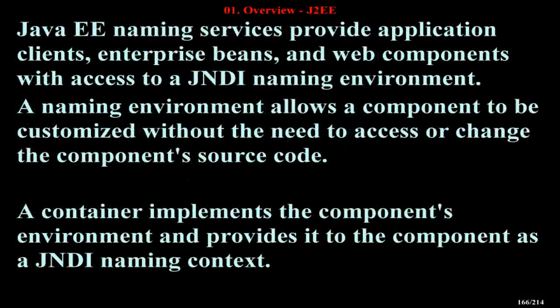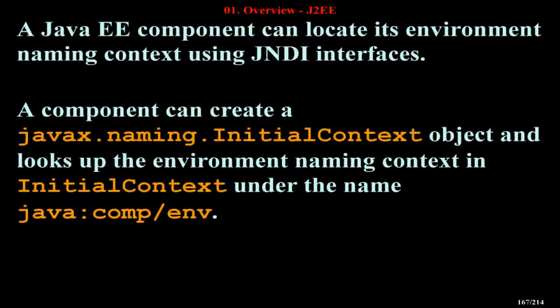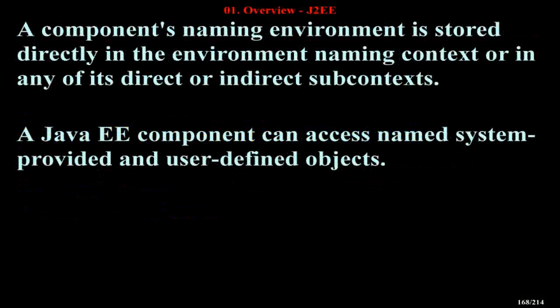Java EE naming services provide application clients, enterprise beans, and web components with access to a JNDI naming environment. A naming environment allows a component to be customized without the need to access or change the component's source code. A container implements the component's environment and provides it to the component as a JNDI naming context. A Java EE component can locate its environment naming context using JNDI interfaces, and looks up the environment naming context in the initial context under the name java:comp/env. A component's naming environment is stored directly in the environment naming context or in any of its direct or indirect subcontexts. A Java EE component can access named system-provided and user-defined objects.